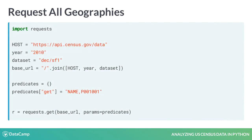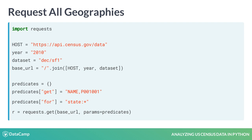So far, we have been requesting all U.S. states at once, but what if we only want the data for one state, say Pennsylvania? In that case, replace the star wildcard with the state code 42. This is the Geographic Identifier, or GeoID, for Pennsylvania.